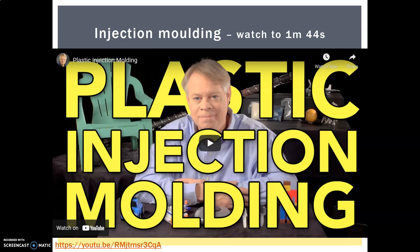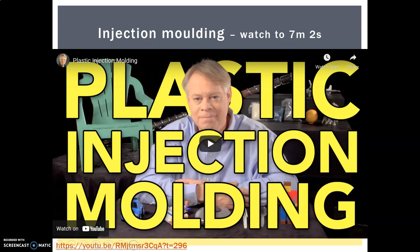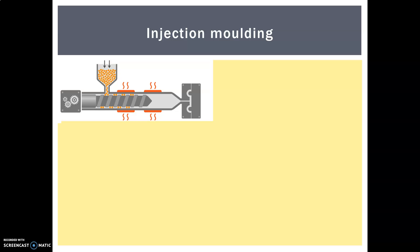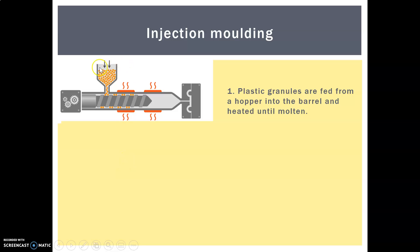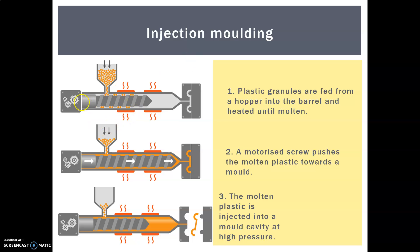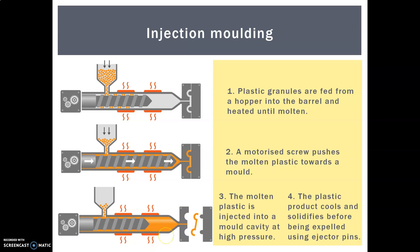Next we have injection moulding. In injection moulding, plastic granules are fed from a hopper into a barrel and heated until molten. A motorised Archimedean screw pushes the molten plastic towards the mould, then rams forward and injects it into a mould or die cavity under high pressure. It cools fairly instantaneously in the die, solidifies, and is expelled using ejector pins.